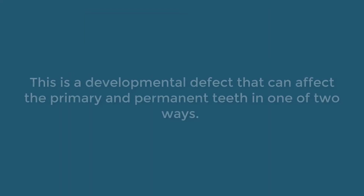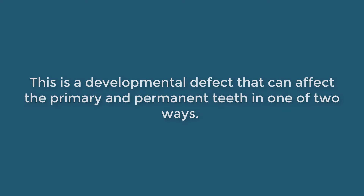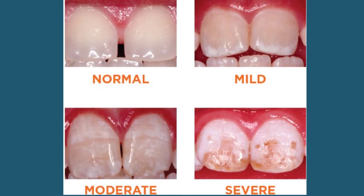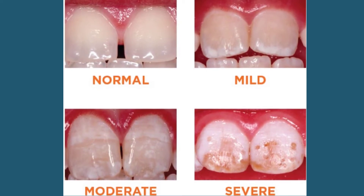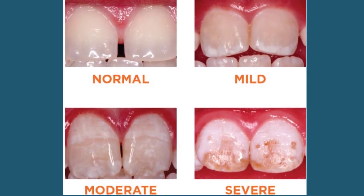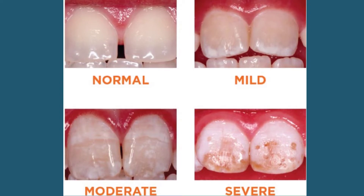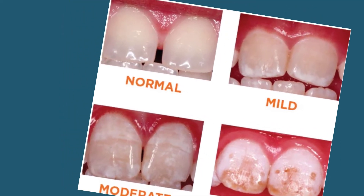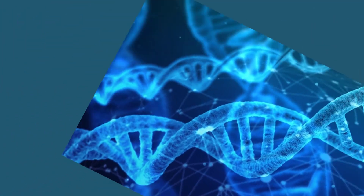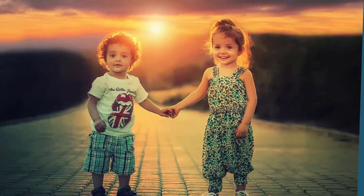Enamel hypoplasia is a developmental defect that can affect the primary and permanent teeth in one of two ways. It is sometimes identified as a physically missing tooth structure and can be seen as pits, grooves, or just missing parts in the crown of the tooth. It's more of a genetic condition and develops quite early on in a child's life.